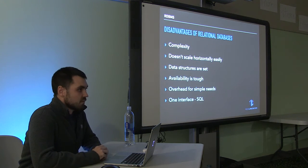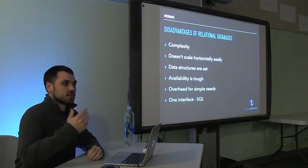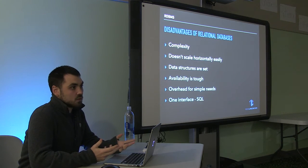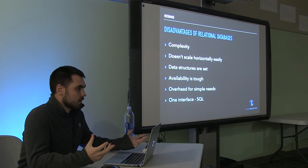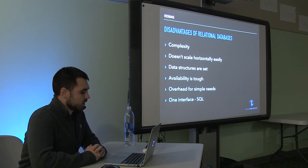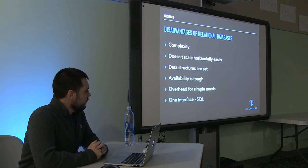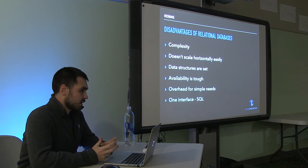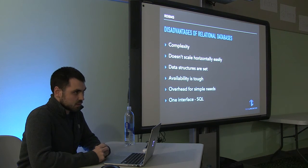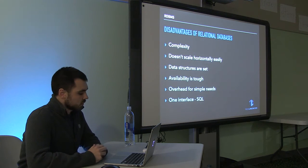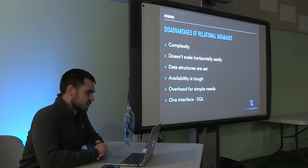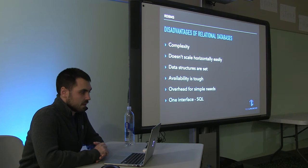Because of ACID properties, availability is tough. Vertical scaling means you'll sometimes only have one server. If that server goes down, your availability is zero. If you could scale horizontally you'd have more availability, but relational databases can't do that as easily. There's a lot of overhead — relational databases are big because of everything they can do, and that's not necessarily required for every application. And there's only one interface to a relational database, and that's SQL. You can't really get the data any other way.